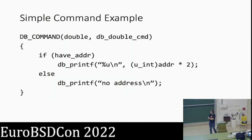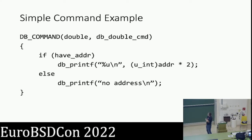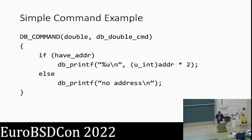Here's my first example — all my examples are toys because I'm trying to demonstrate the relevant parts, not complicated C logic. This defines a new command called 'double' that, if you give it a number, prints out twice the number; otherwise it tells you that you didn't give it anything.